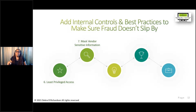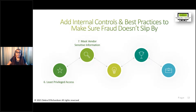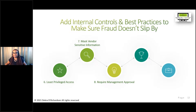Tip seven: mask sensitive information. AP needs access to the tax ID to post invoices and the bank account number to identify the right location, but you can give them only the last four or five digits of the tax ID — that's enough to post an invoice — and only the last four or five digits of the bank account number — that's enough to find the correct location to select for payment. Tip eight: require management approval, especially as a compensating control when there's a segregation of duties issue. Require management approval for new vendor adds and existing vendor changes, and make sure the vendor team attaches supporting documentation.